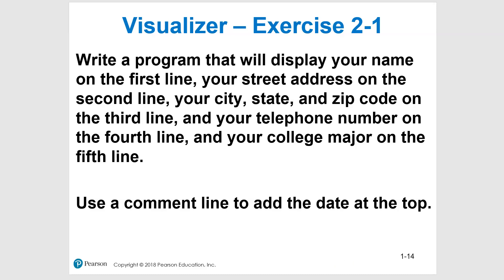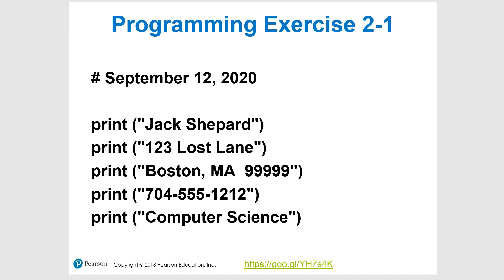Hopefully you had a chance to do that. Here's a sample solution. This is just random stuff from the book. We have the date up here as a comment, and then name, address, location — city, state, zip — phone number, and computer science for major. There's also a link here that will take you to Python Tutor code so you can execute it and see how it works.